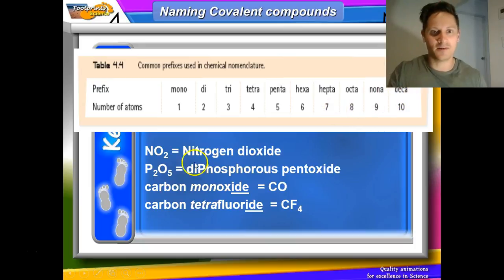So NO2 would be nitrogen, and O is oxide for oxygen, but there's two of them, so you say dioxide. P2O5, P is phosphorus, there's two of them, so the prefix for two is di, so it's diphosphorus. And five oxygens, oxygen becomes oxide, and five of them penta-oxide. Carbon monoxide, because there's only one oxygen, so you have to use mono for one. And CF4 would be carbon tetrafluoride. Tetra, because there's four fluoride ions.